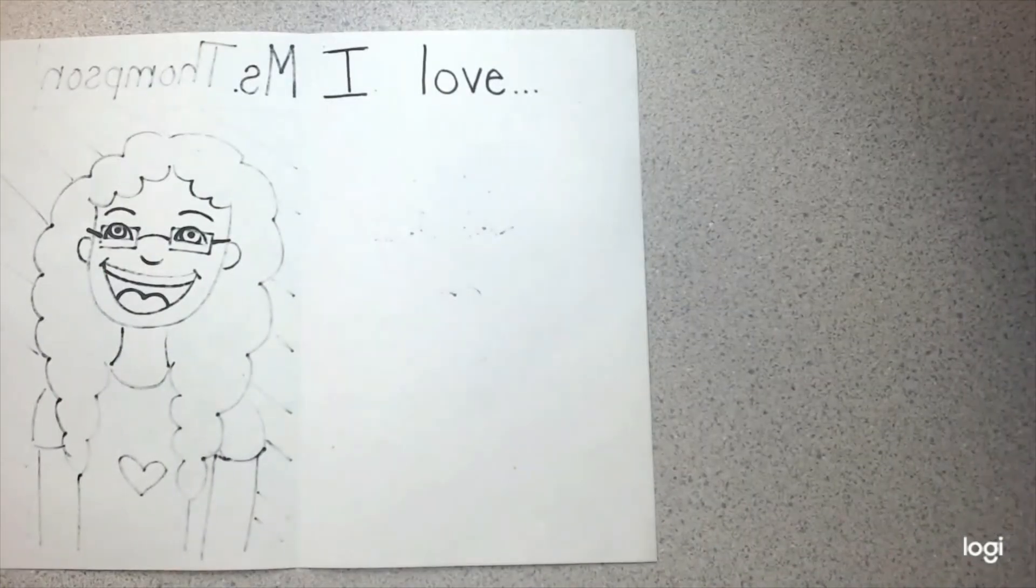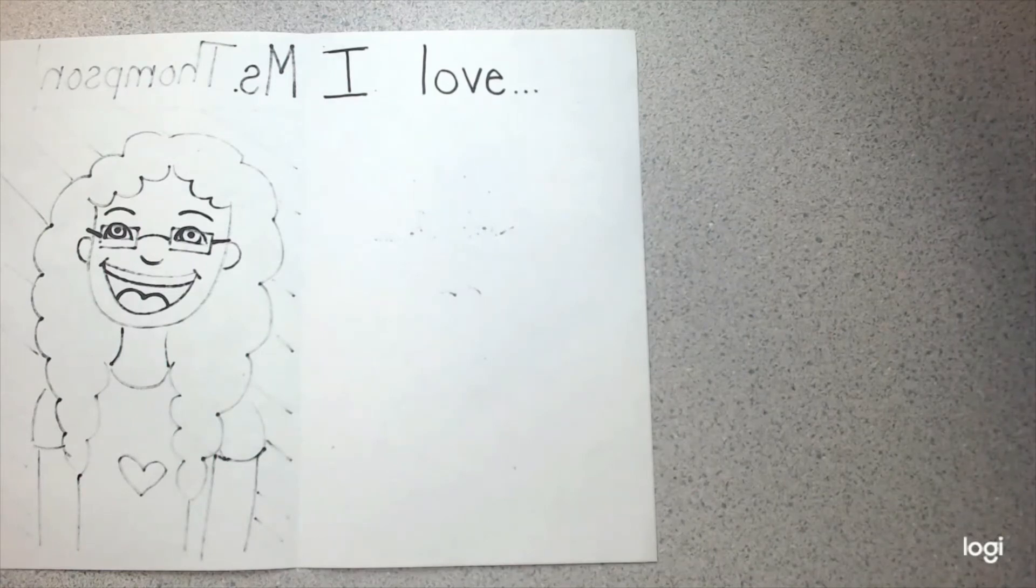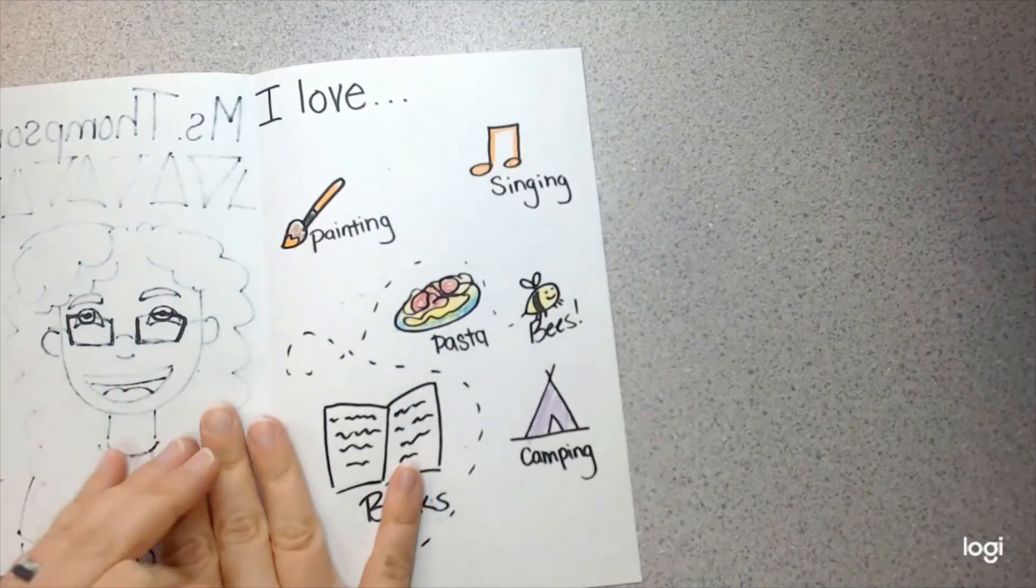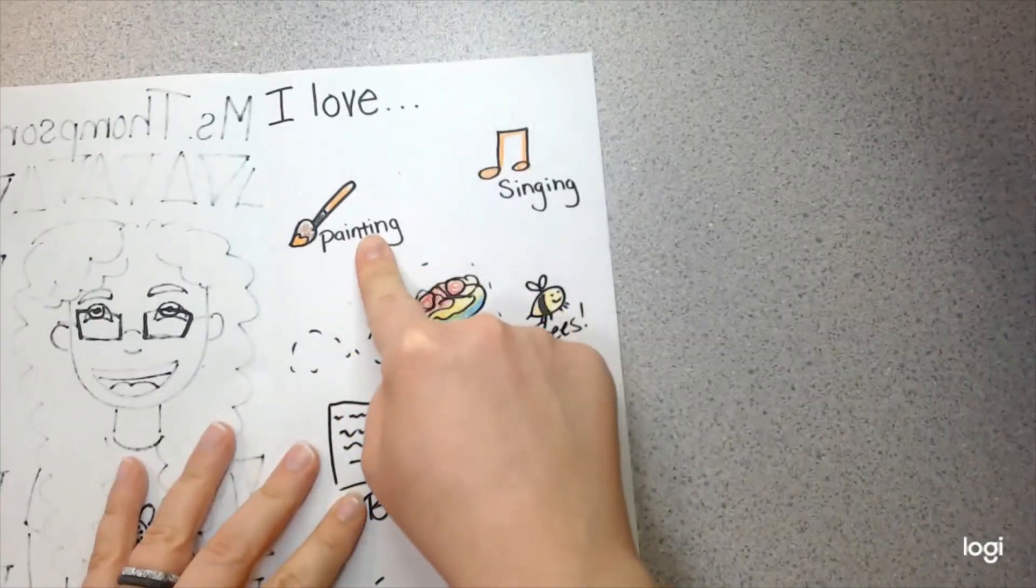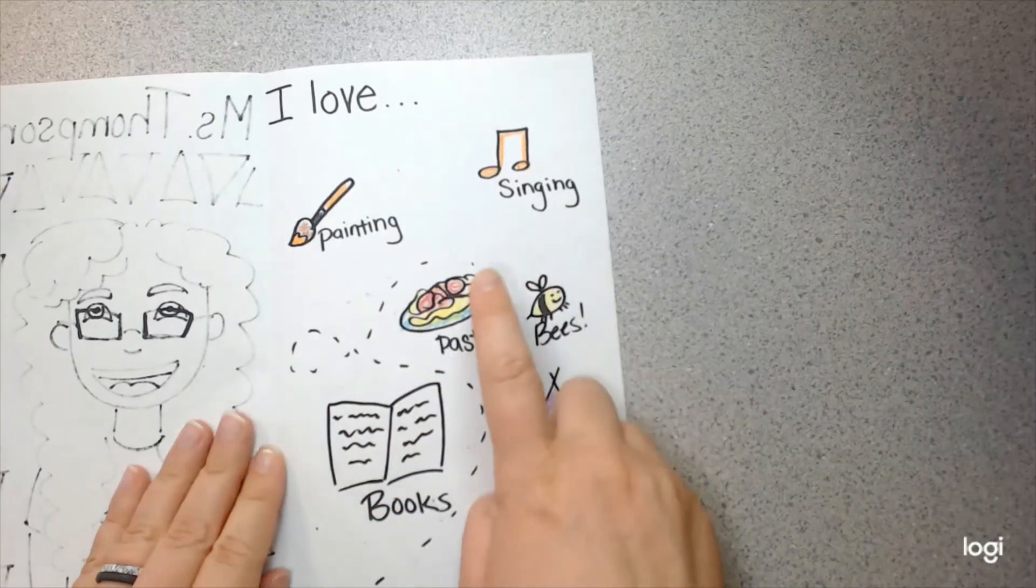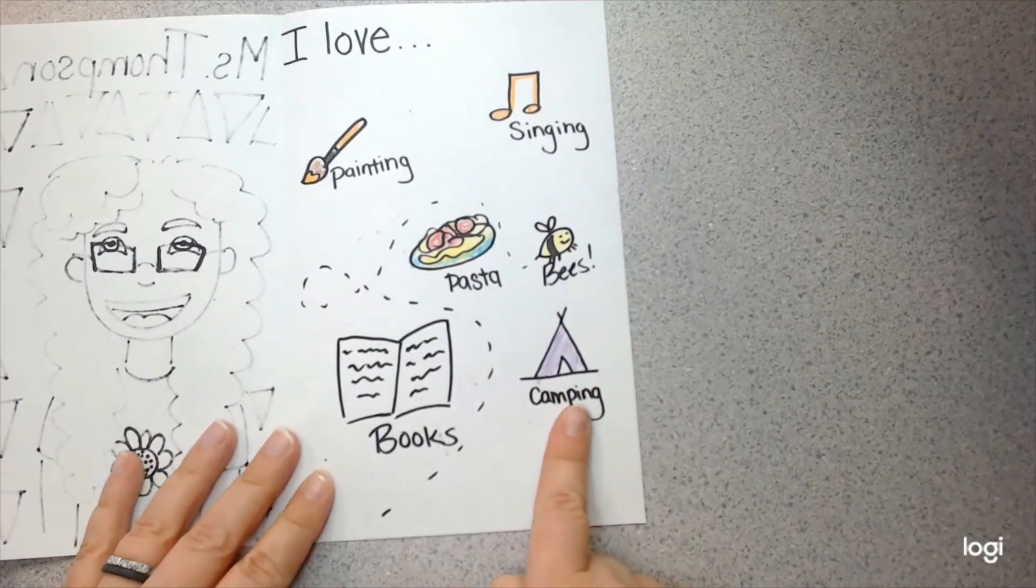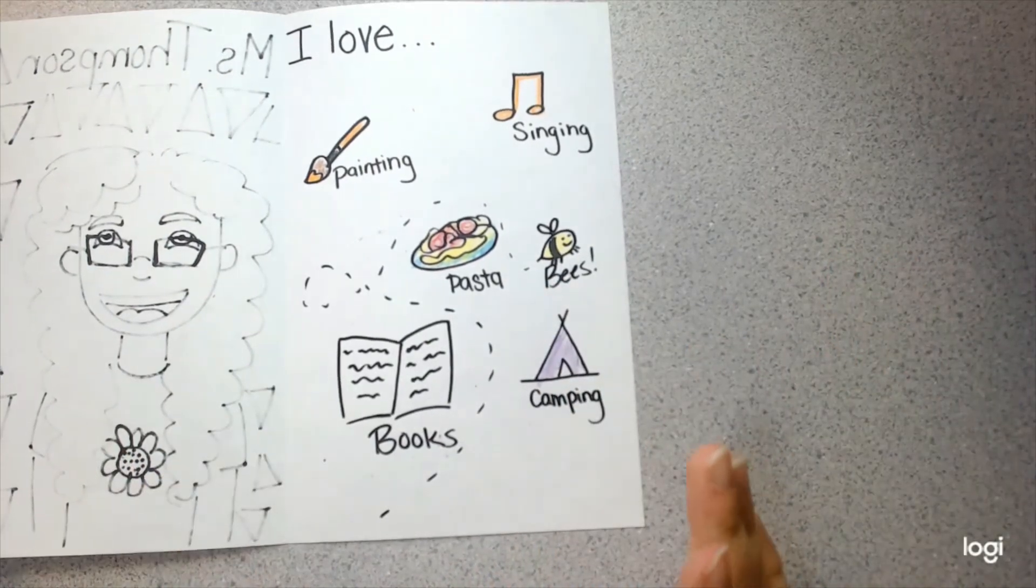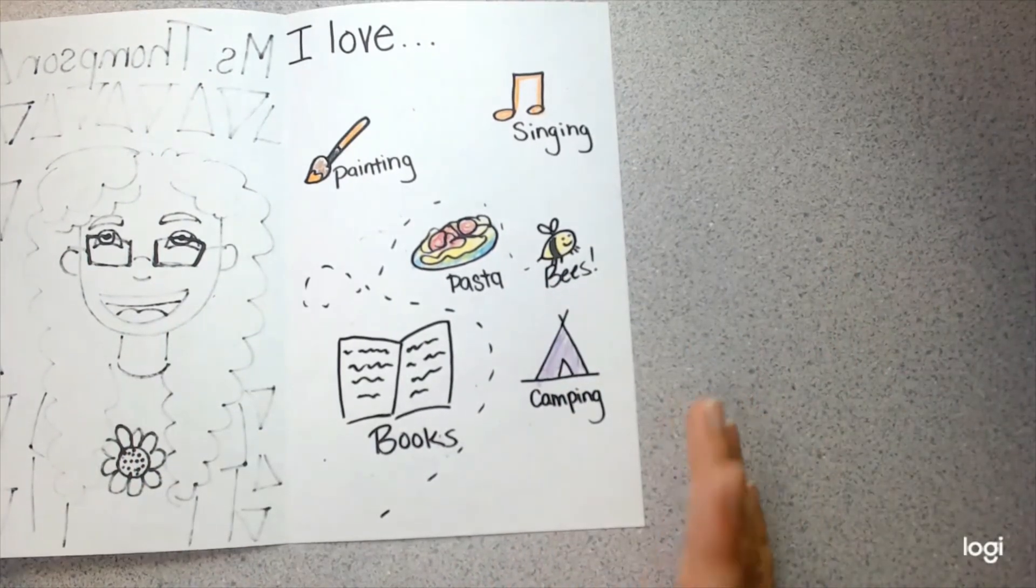Now, in your piece, you're going to draw all of your favorite things. The things that you love. It could be your family. It could be your dog. It could be your cat. It could be your favorite video game, your favorite sports team, your favorite flower. Just tell me about you so I can get to know you better. In my example, from the beginning, I said that I love painting, singing, pasta, books, camping, bees, and there are so many more things that I love. But that was just a few.